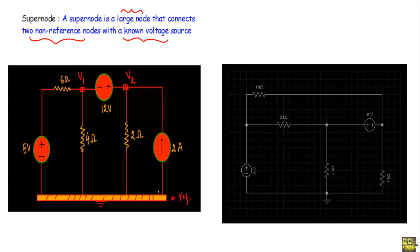The non-reference nodes are identified relative to the ground (reference node). When a known voltage source connects two non-reference nodes, a supernode is formed. Node one and node two, connected by a known voltage source, form a supernode. The ground is the reference node with voltage equal to zero.